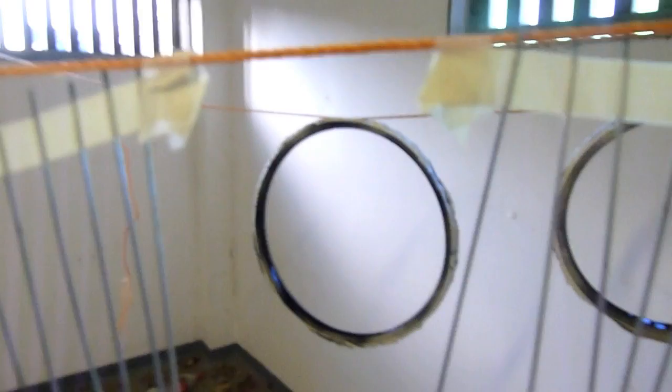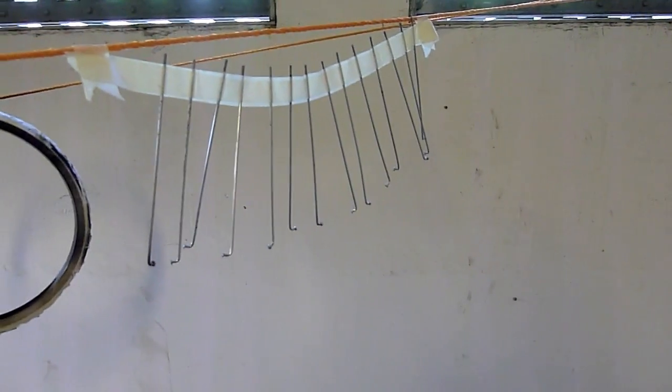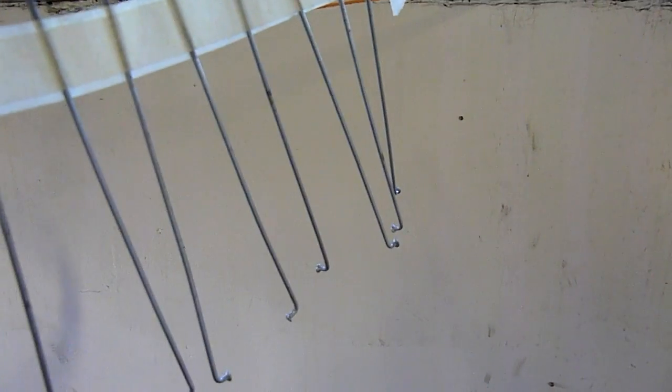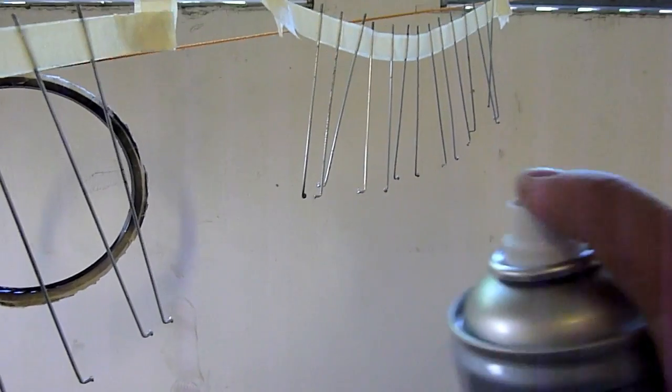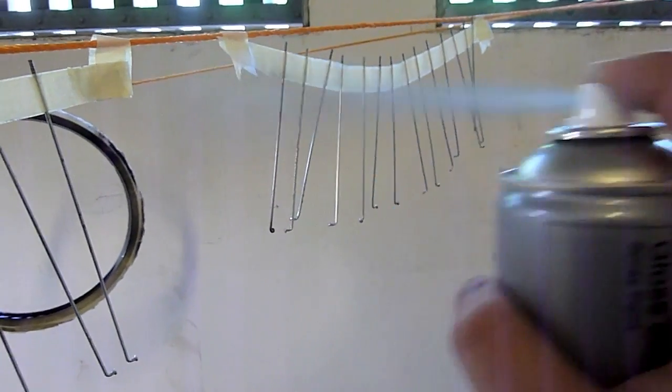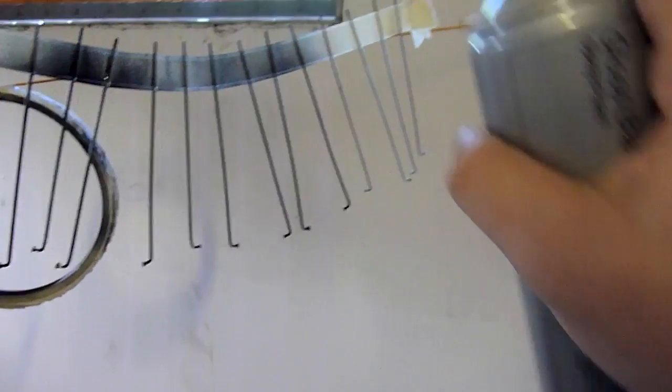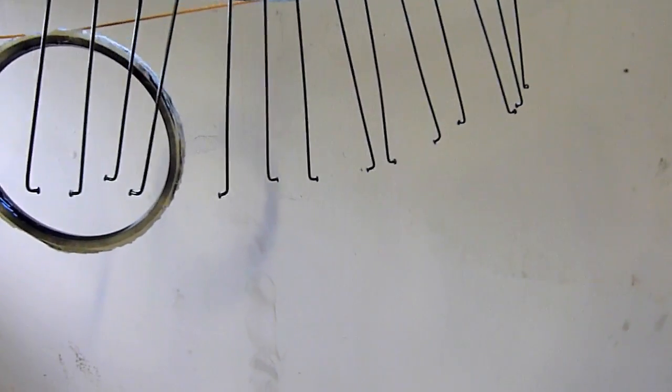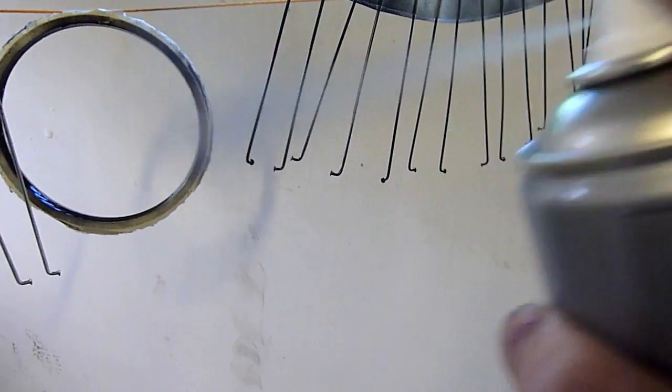There we go. Okay, so the wheels are all done there. I'm going to just move on to the spokes. Now these are pretty easy. Again, just one thing you want to make sure is that you've got nice, consistent coverage. Just quick downstrokes down them all.